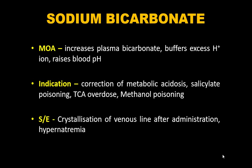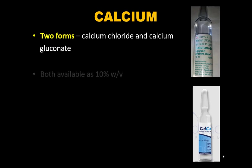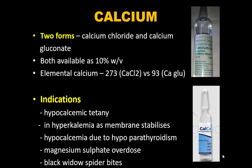Calcium is available as calcium gluconate and calcium chloride, both in 10% w/v. Elemental calcium in calcium chloride is three times that of calcium gluconate — 273 mg vs. 93 mg per 10 mL. Indications include hypocalcemic tetany, hyperkalemia (as a membrane stabilizer — physiological antagonist of potassium), hypoparathyroidism-related hypocalcemia, magnesium sulfate overdose, and black widow spider bites.